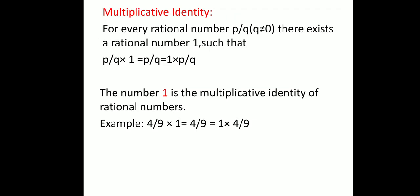Coming to multiplicative identity: just as we discussed additive identity and additive inverse, similarly for multiplicative identity — for a rational number P/Q (Q ≠ 0), there exists a rational number 1 such that multiplying any rational number by 1 gives the same rational number. So 1 is the multiplicative identity of rational numbers. For example, 4/9 × 1 = 4/9.